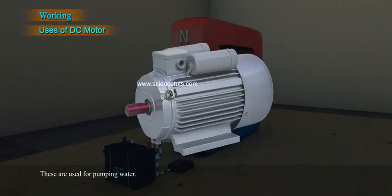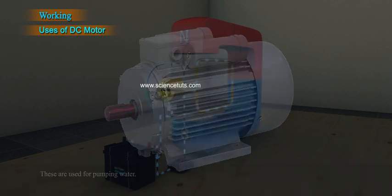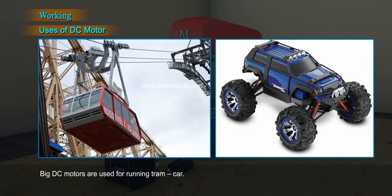These are used for pumping water. Big DC motors are used for running trams and cars.